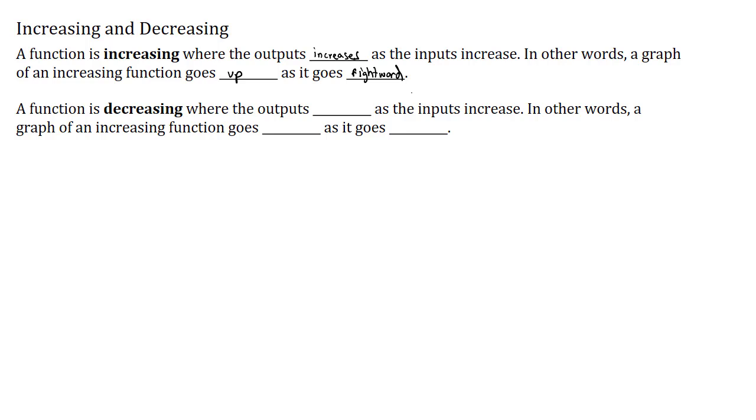A function is decreasing when the outputs decrease as the inputs increase. In other words, the function goes down as the graph goes rightward.